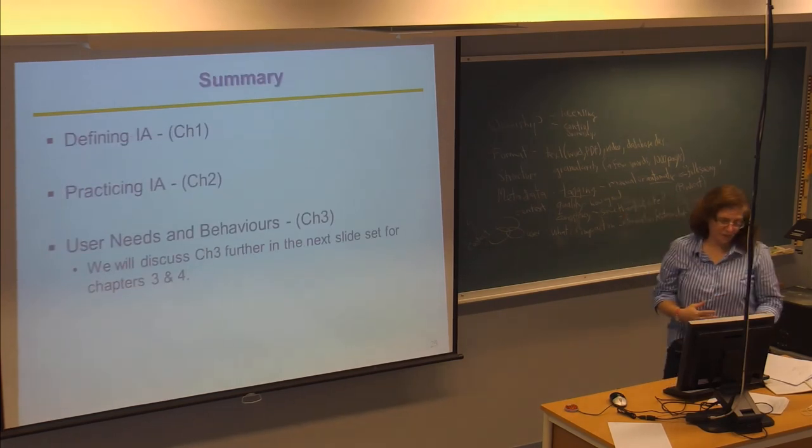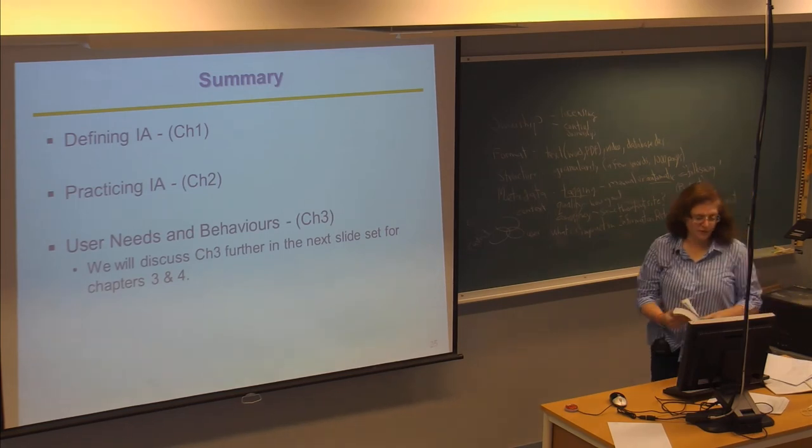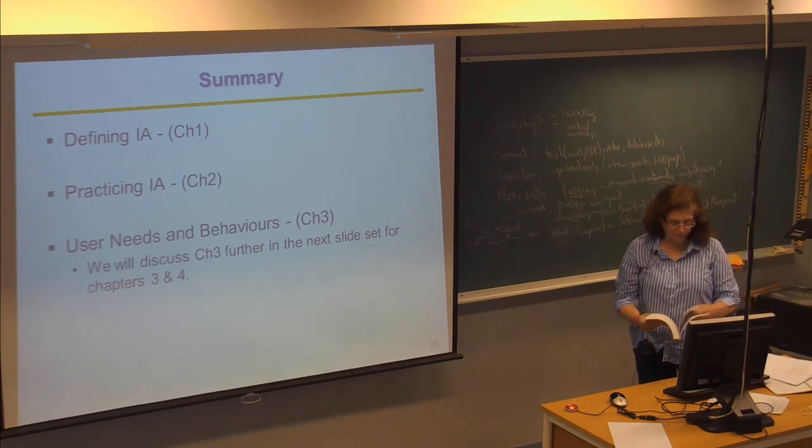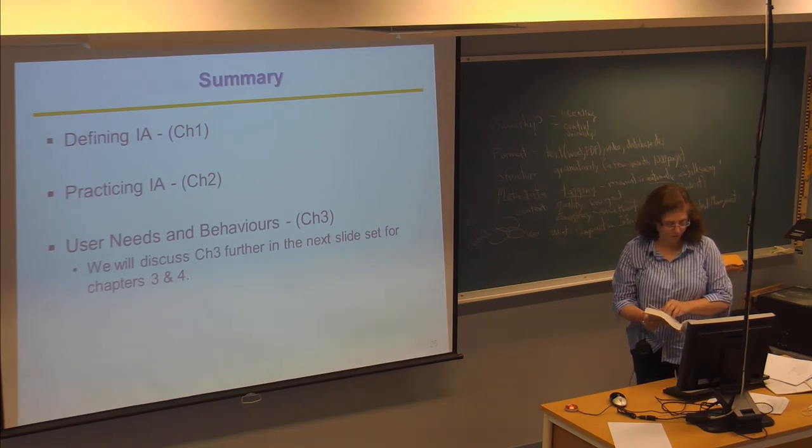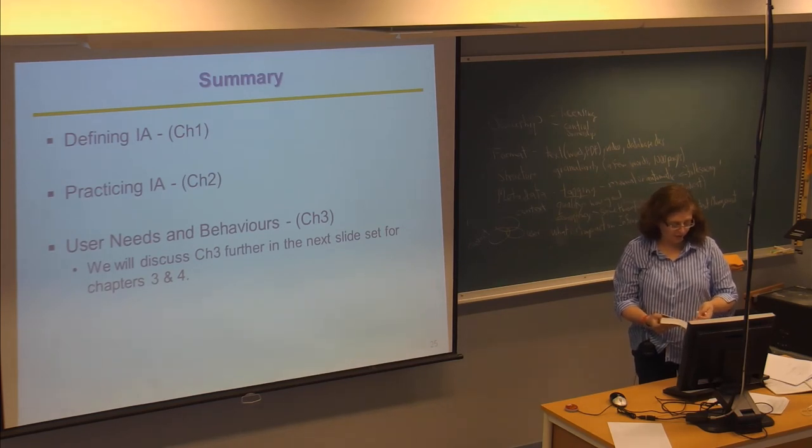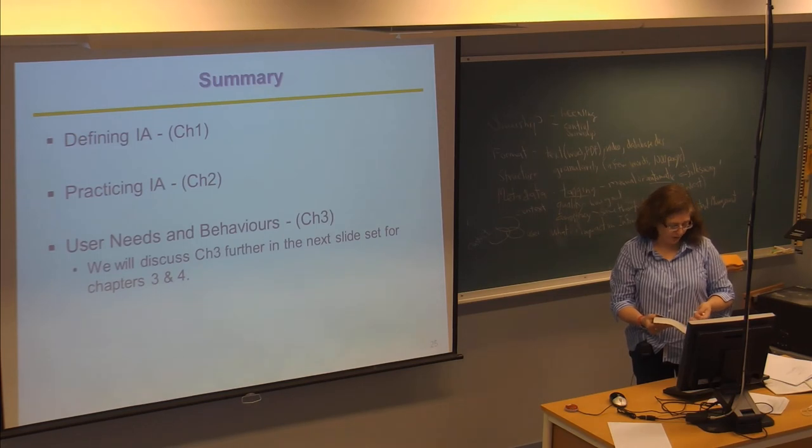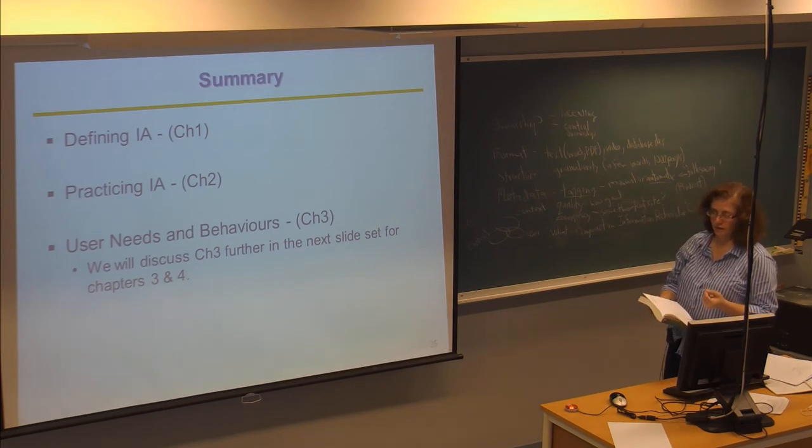So in summary, the first part of the book, which is on introducing information architecture, is consisting of chapters 1, 2, and 3, and that's defining information architecture, practicing information architecture, and then user needs and behavior. What we talked about today were basically chapters 1 and 2, and chapter 3 is in the next slide set.